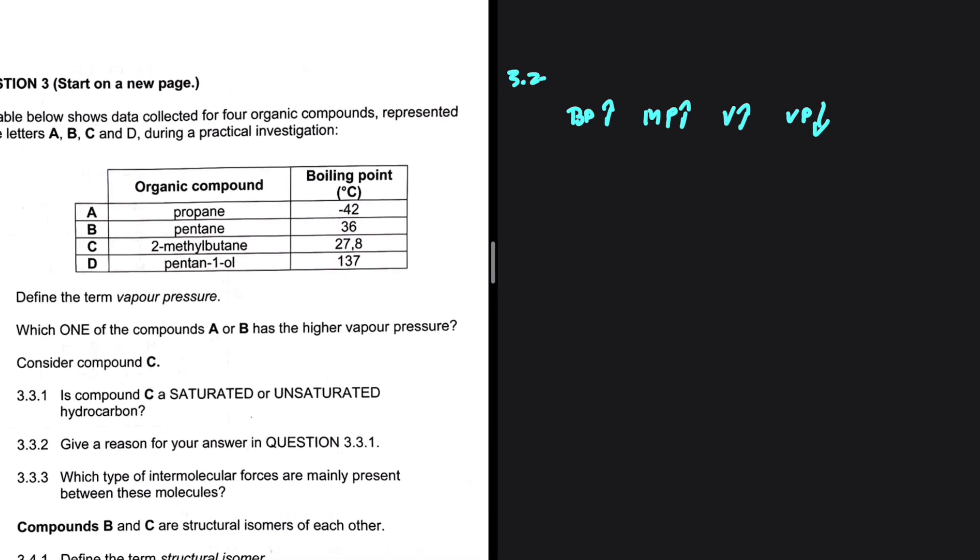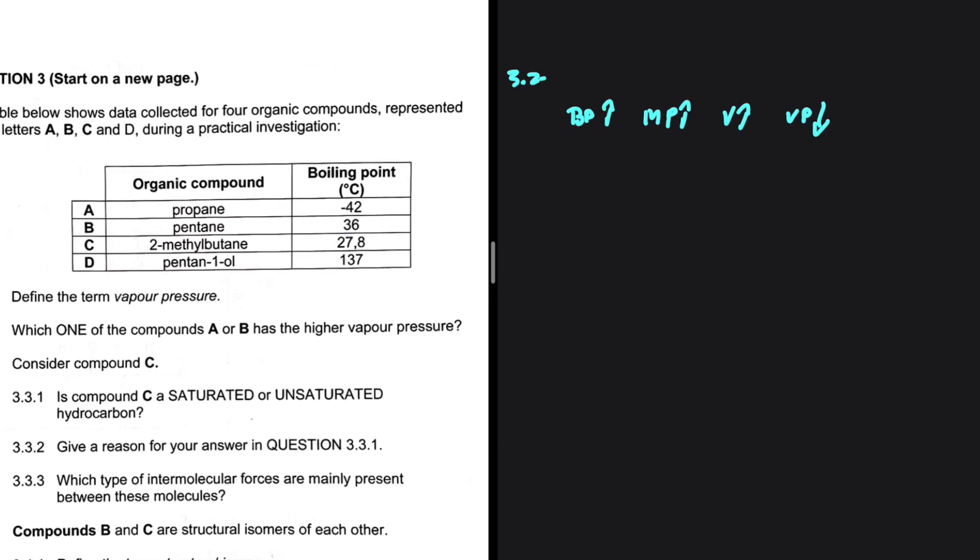Well, the compound with the lowest boiling point will have the highest vapor pressure. So between A and B, which one has the lowest boiling point?